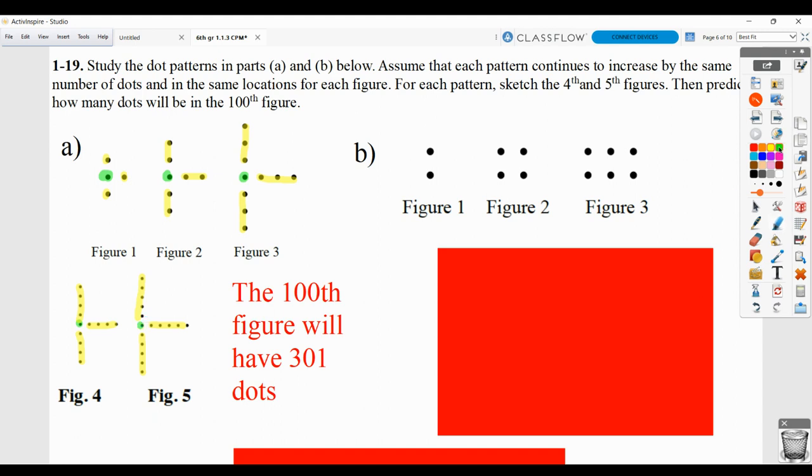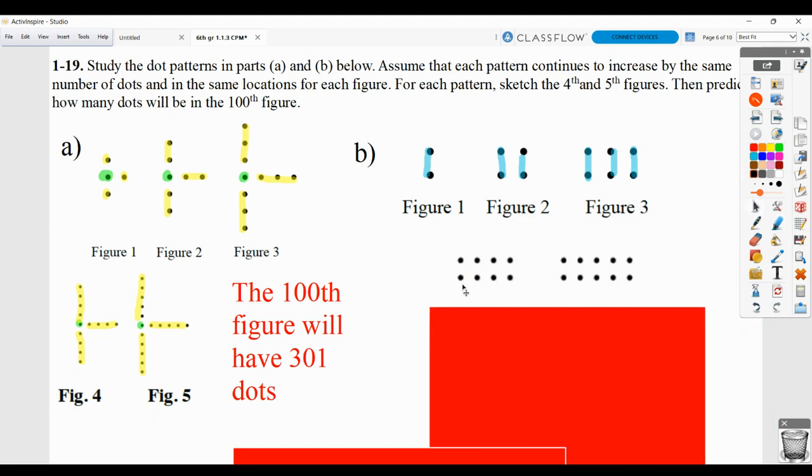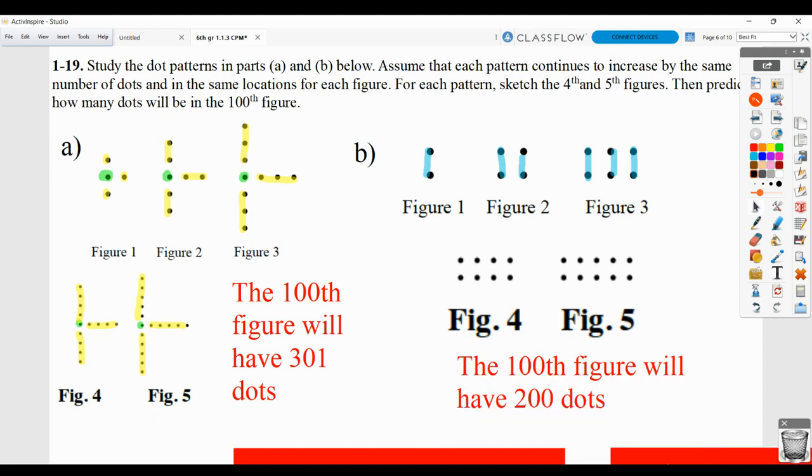For B, we see that figure one has two vertical dots. Figure two has two columns of two vertical dots. Figure three has three columns of two vertical dots. So figure four would have four columns of two vertical dots. Figure five would have five columns of two vertical dots. So then figure 100 would have 100 columns of two vertical dots, meaning 200 dots.